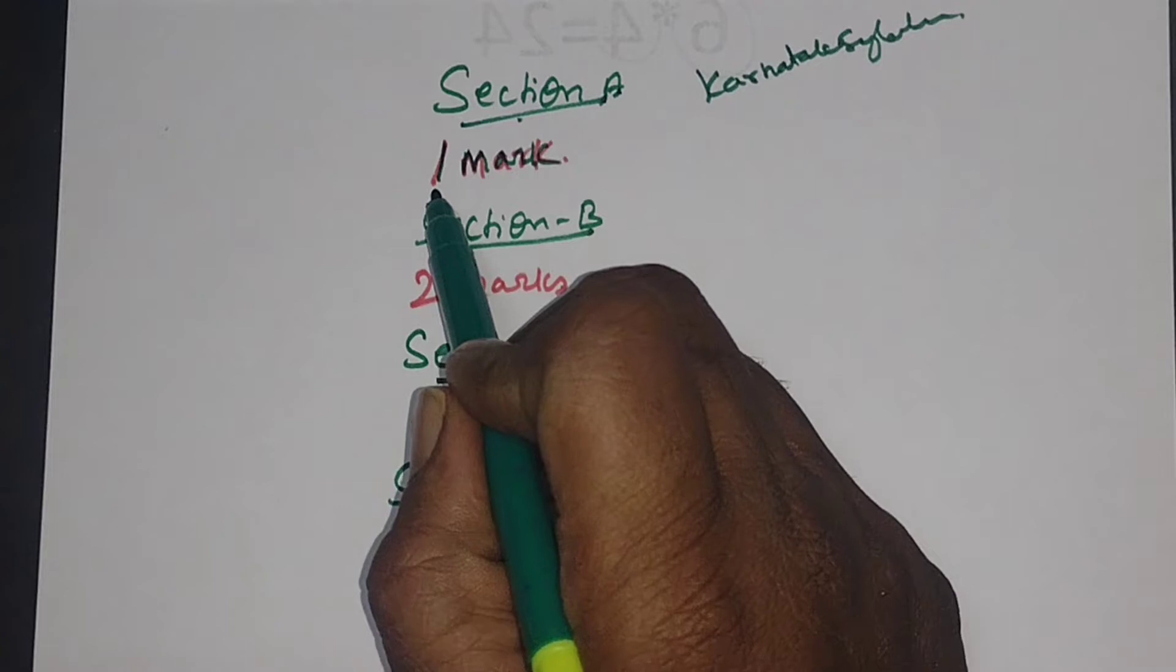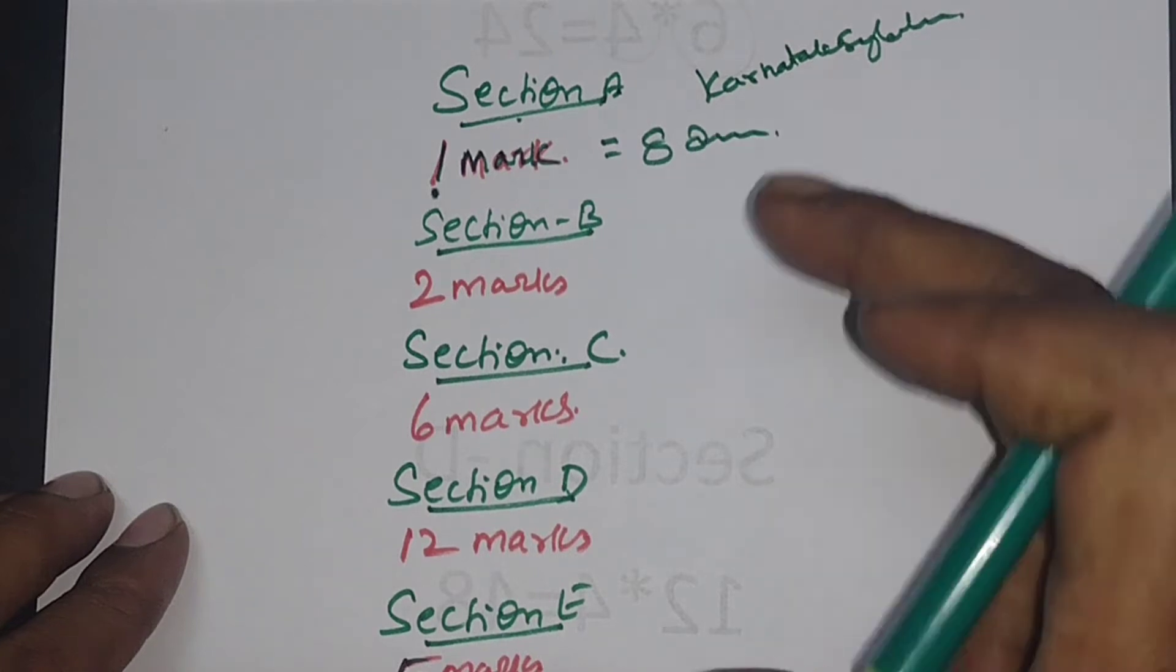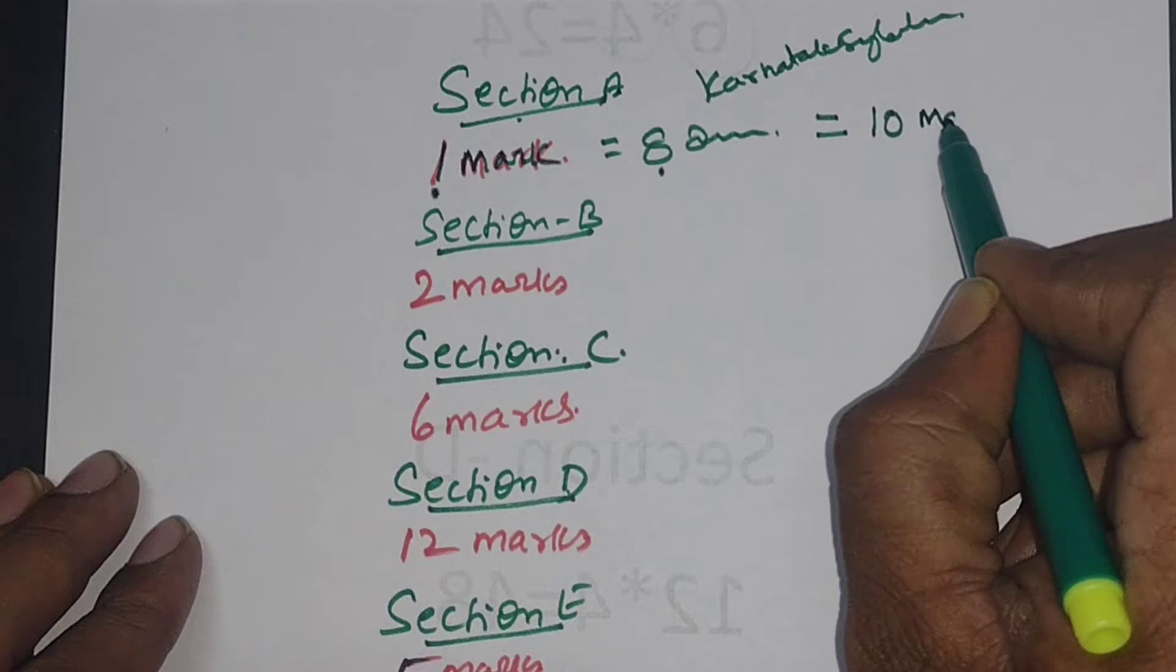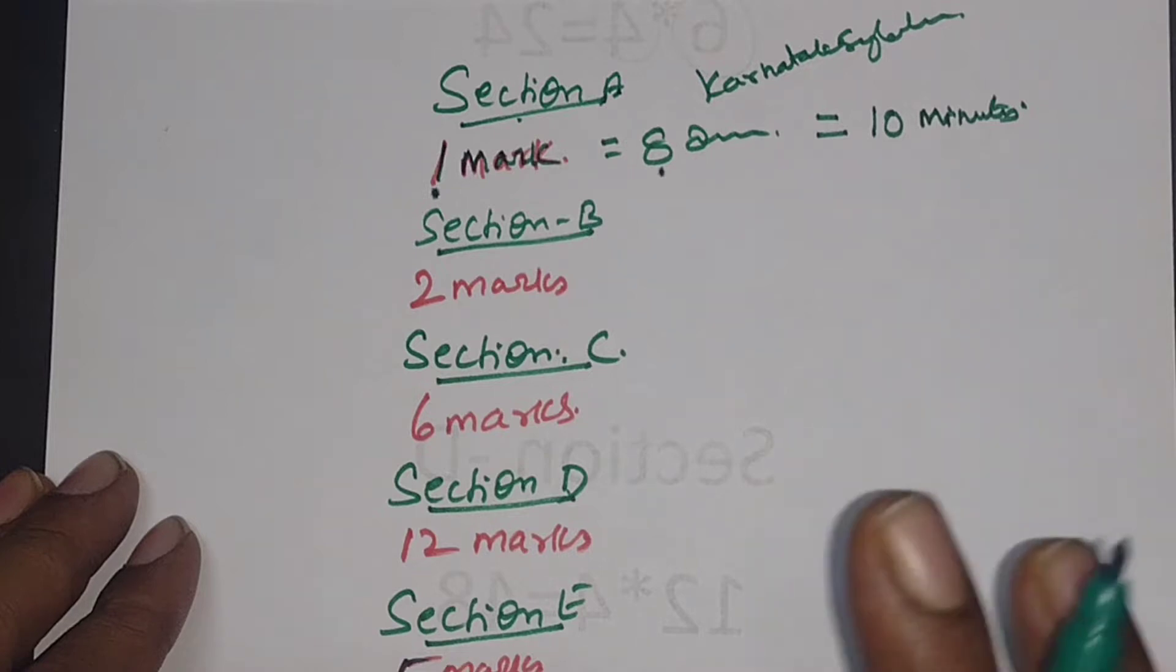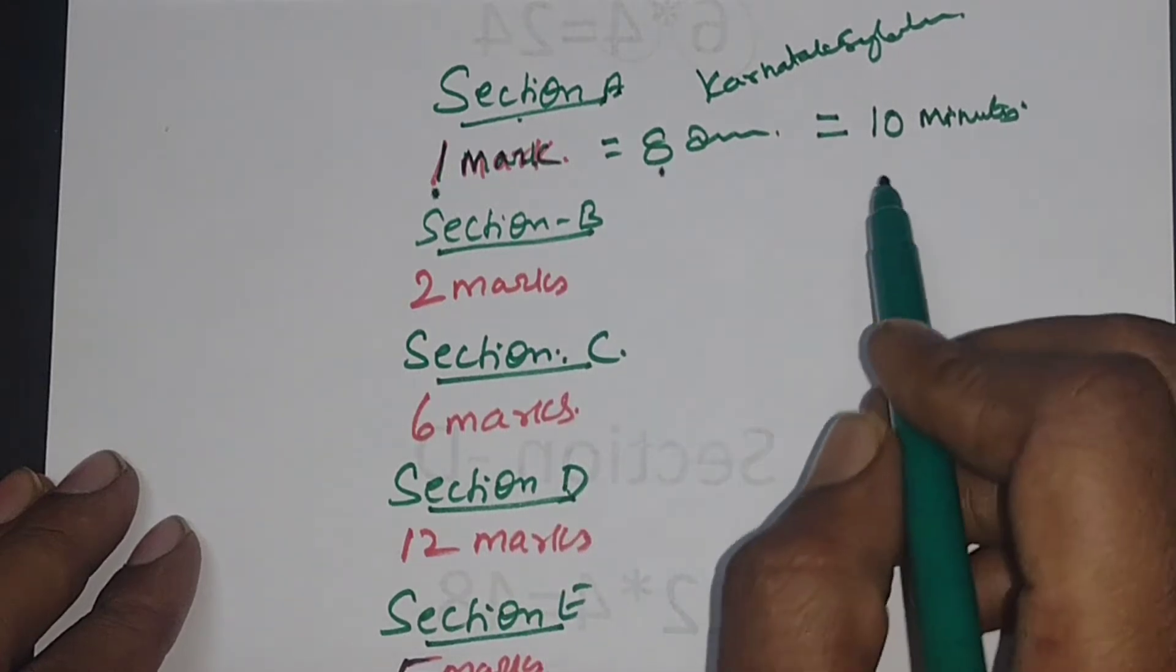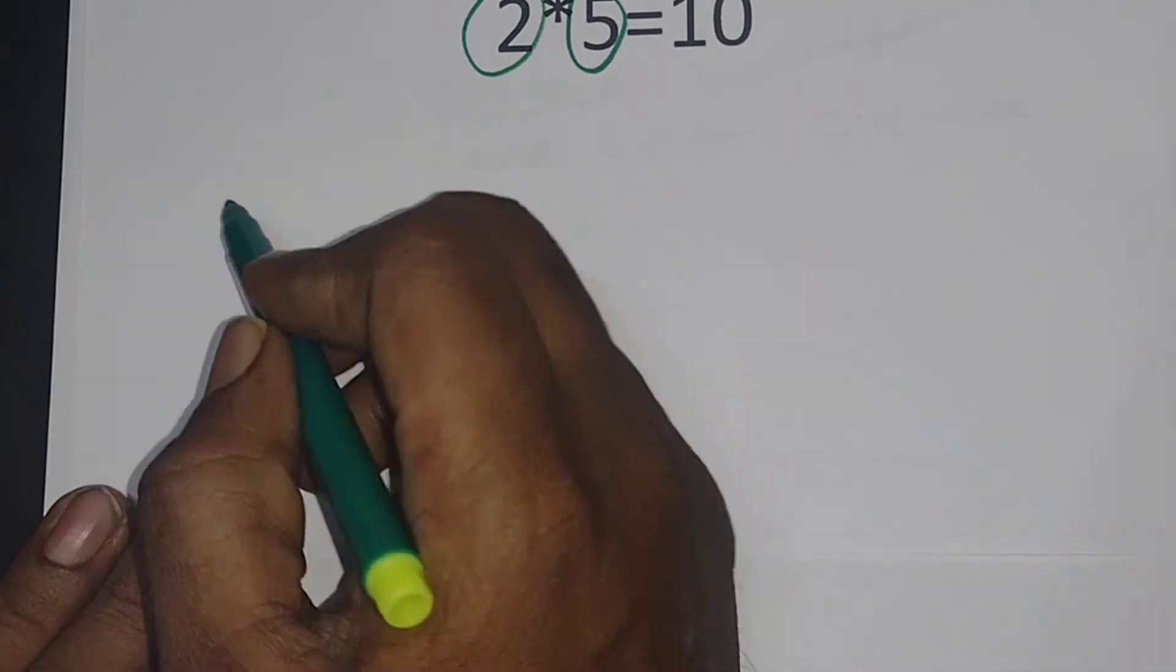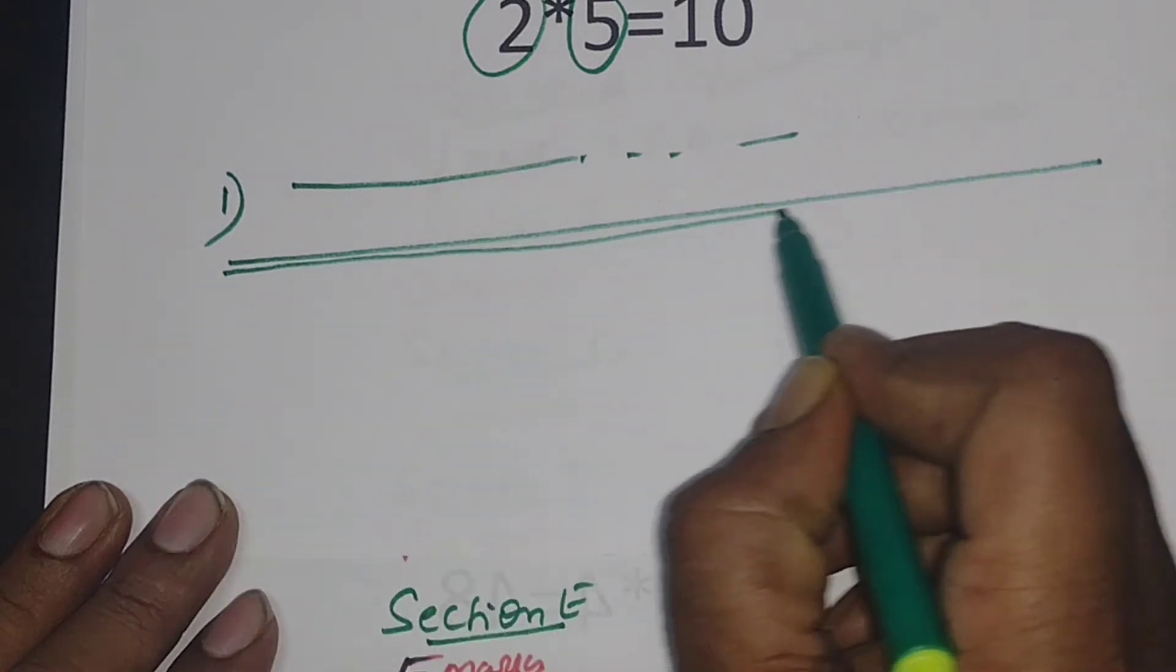In section A, you need to attend eight one-mark questions. Maximum, you should spend 10 minutes on these questions. Try to finish in less than 10 minutes. After each and every question, immediately draw two parallel lines. For example, write the answer within the 10 minutes, then draw two parallel lines between each answer. The presentation of the paper will be very good.